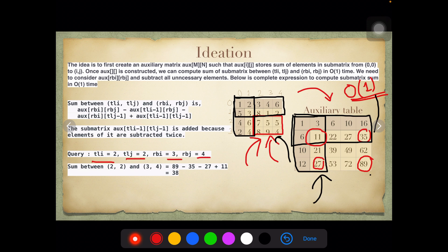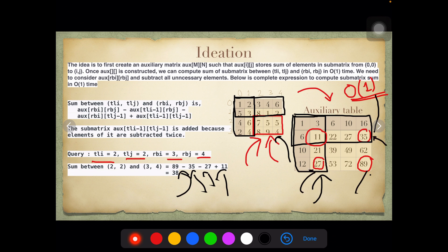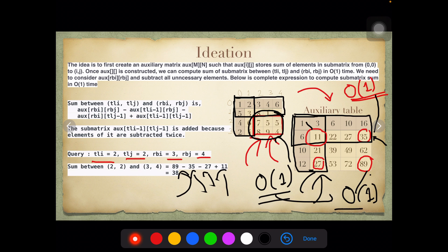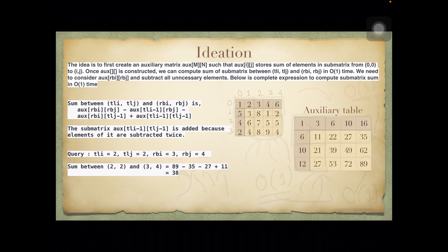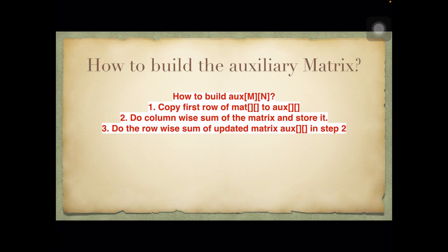So from (2,2) to (3,4), all we did was: 89 − 27 − 35 + 11, which gives the sum of the given submatrix. You can clearly see we can find it in O(1) because searching in a 2D array is O(1). In O(1) time complexity we were able to find, for a given query, the sum of the given submatrix. Our next question is: how do we create the auxiliary matrix?